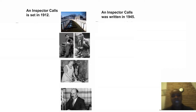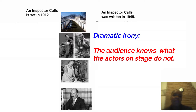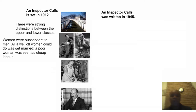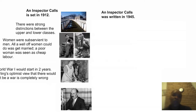An Inspector Calls is set in 1912 but was written in 1945, which means there is the device of dramatic irony — everything the characters talk about in 1912 we would know did or didn't happen by 1945. In 1912 there were strong distinctions between the upper and lower classes, women were considered subservient to men, a poor woman was seen as cheap labour, and World War I was just two years away. So when we see Birling's optimistic view that there would be no war, it is completely wrong and creates dramatic irony in the play.